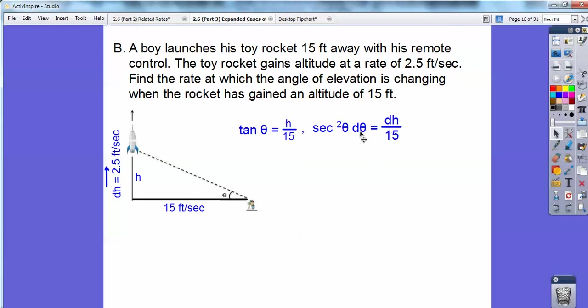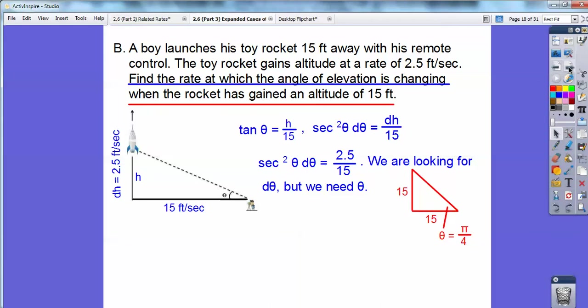I don't know what theta is yet. I'll get it in just a second. I know what dh is, and I'm looking for d theta right there. So what I'm going to do is, I plugged the 2.5 in right there, and we're looking for d theta, but we need to know the angle itself. Now how I'm going to get the angle itself is by plugging in where he's 15 feet away. When the rocket's 15 feet up, I have an isosceles right triangle, which means that has to be 45 and that has to be 45. It's a 45, 45, 90.